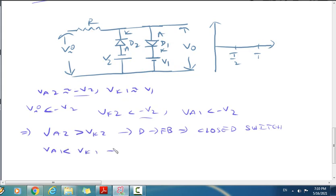D1 is off and acts as an open switch. D2 is on, so in parallel combination V0 equals minus V2. Output representation shows this.